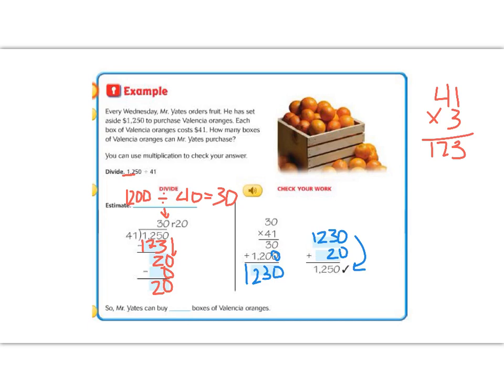So Mr. Yates can buy how many boxes? 30 boxes. He'll have a remainder left over, but again, good to have a little bit extra than not enough.